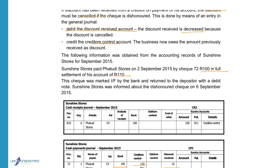If the check is cancelled, we have to cancel it in the cash receipts journal to reverse that original entry. We will record the R100 in the bank column and show that it goes to the creditors control account because we owe the money to them again.